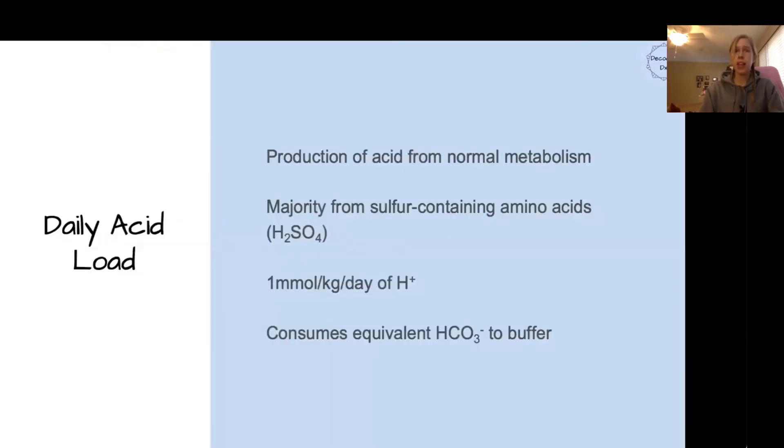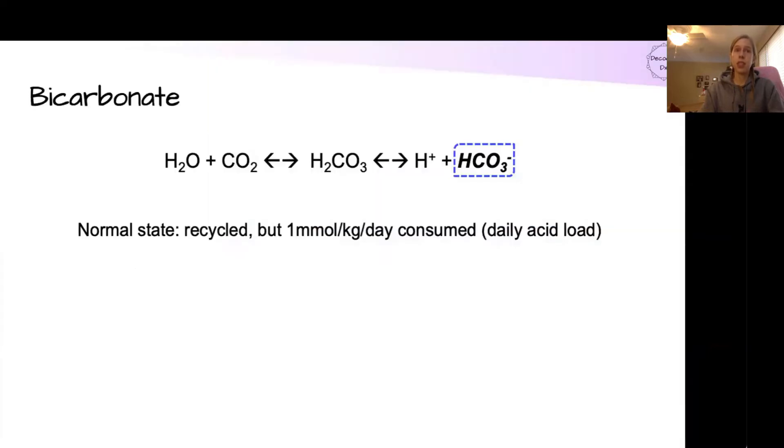Quick reminder of the daily acid load. This is the amount of acid that's normally produced in our bodies from just normal metabolism, a lot of that coming from amino acid metabolism. This produces about one millimole per kg per day of excess acid that has to be buffered by an equivalent amount of bicarbonate. That bicarbonate consumption is one of the key issues that comes up with renal tubular acidosis. So that's what we're going to be focusing on.